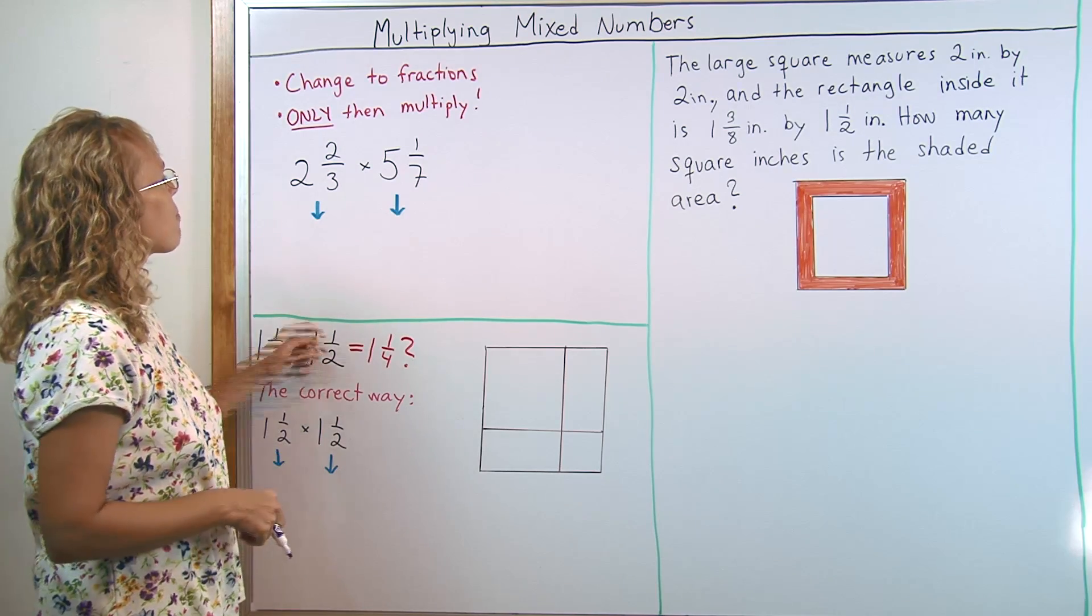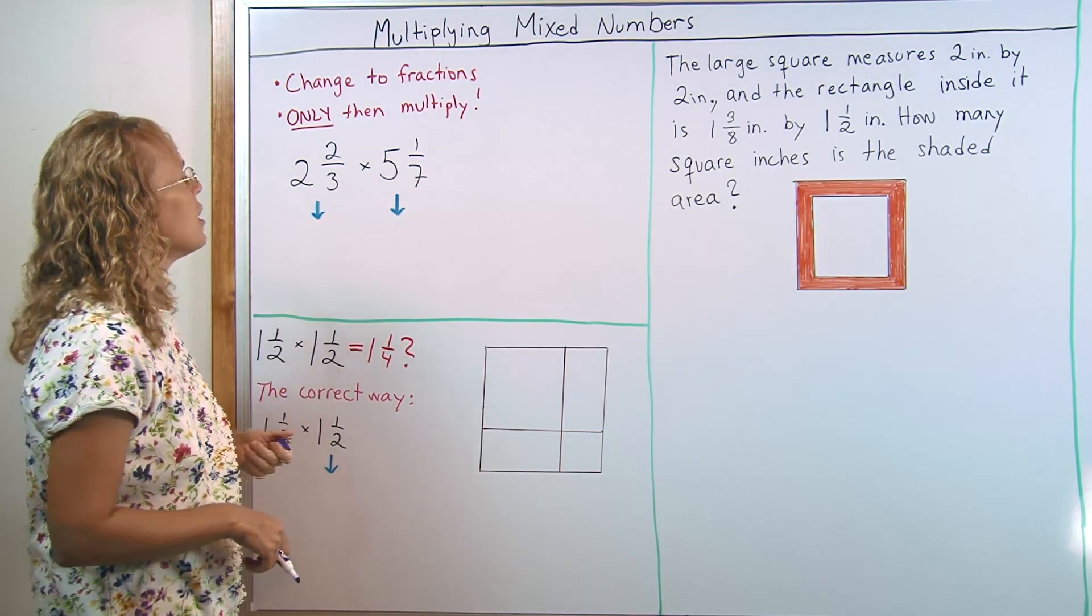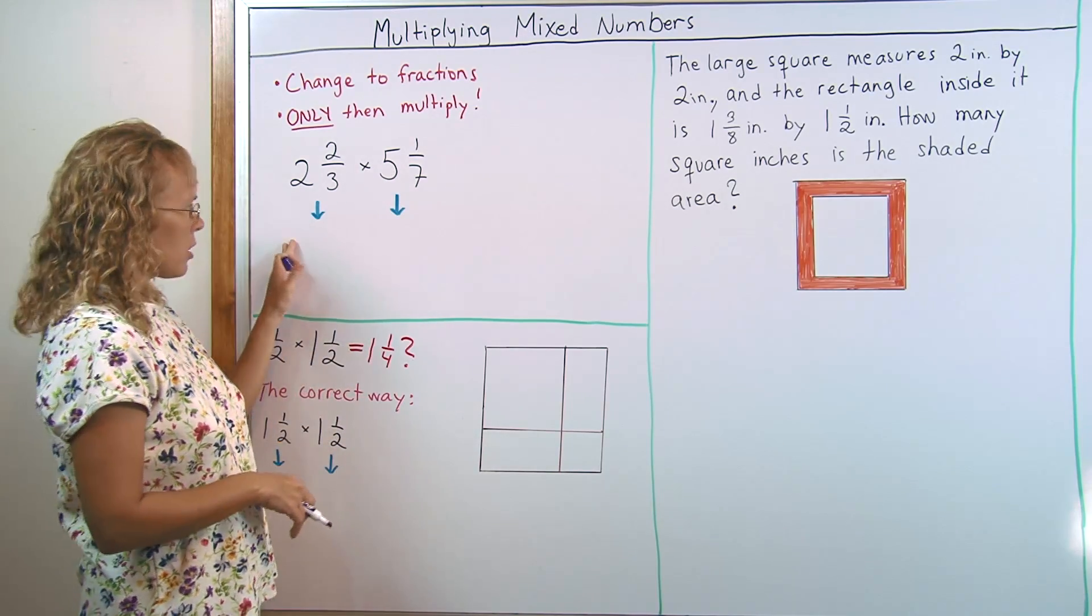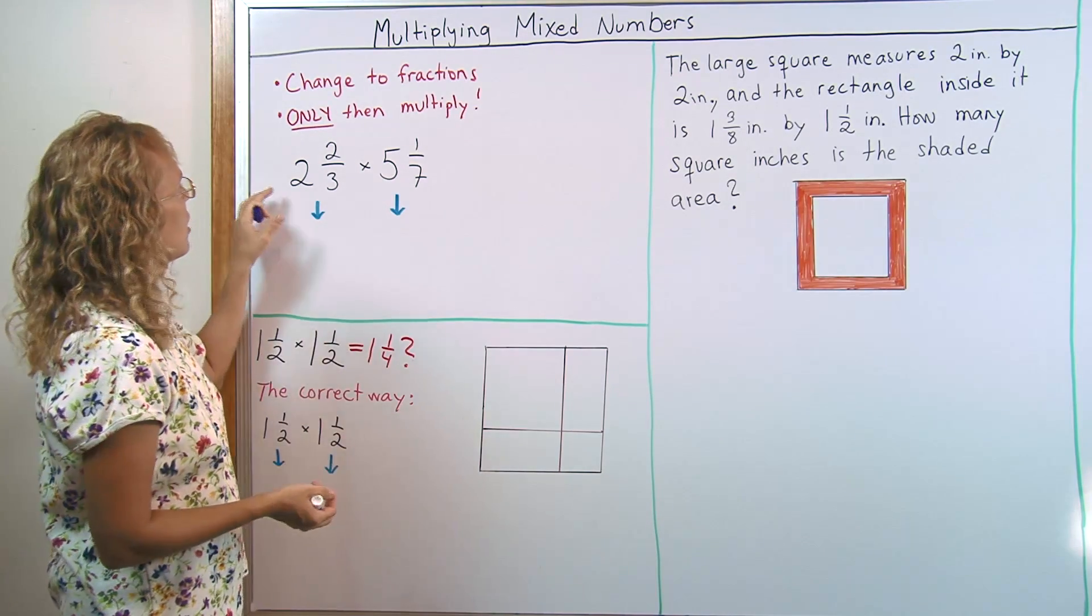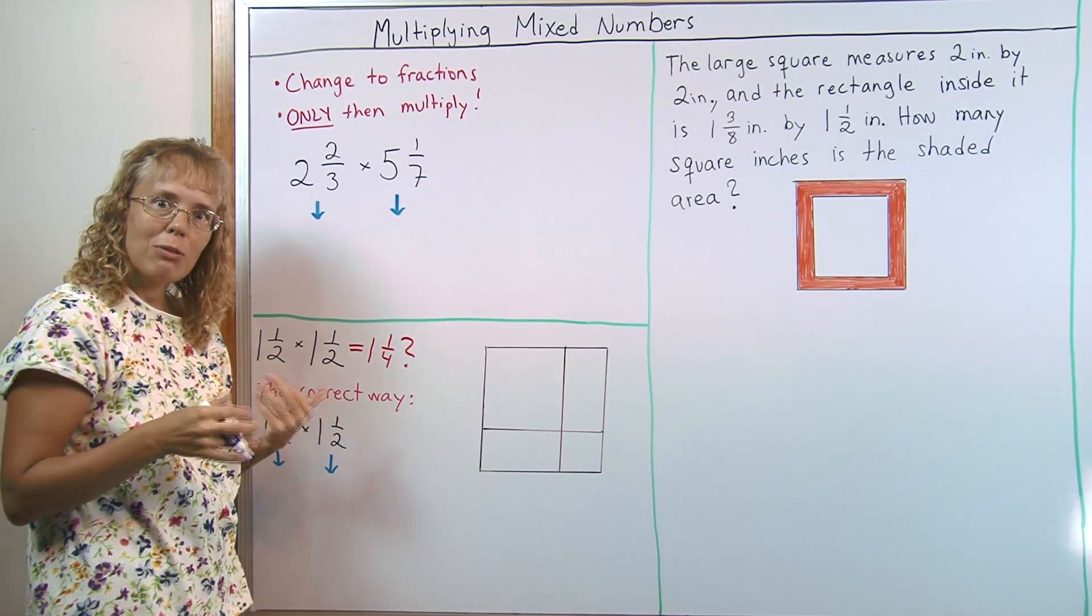Let's do one example problem. Here I have 2 and 2 thirds and then 5 and 1 seventh. And let's multiply them. First I need to change them to fractions. So this into a fraction, okay? You need to remember how that was done, right?